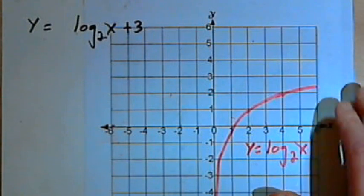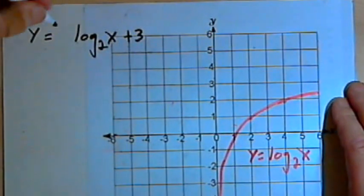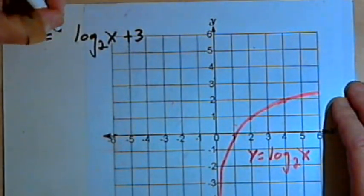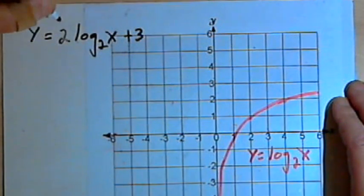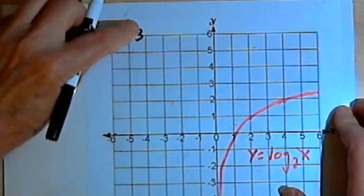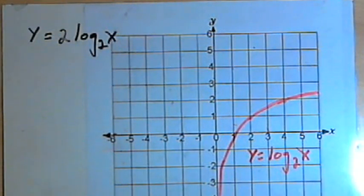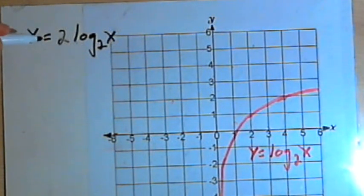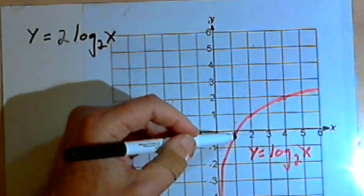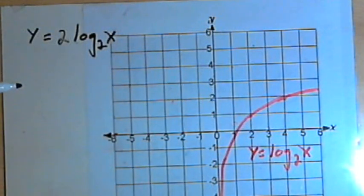Besides shifting the graph vertically, I can stretch it vertically. If I put a coefficient, like a 2, in front of the logarithm, then what that's going to do, as with other functions you've seen, is stretch the graph vertically. It's going to take all of the y-coordinates and multiply them by 2.